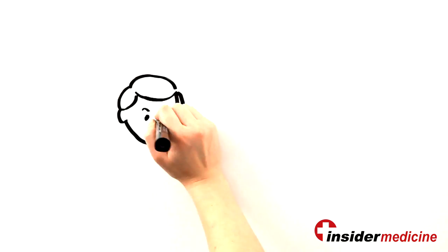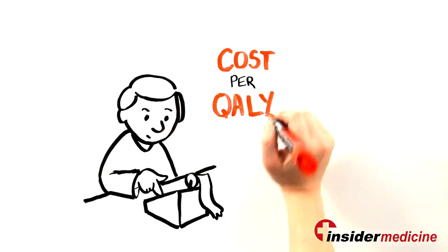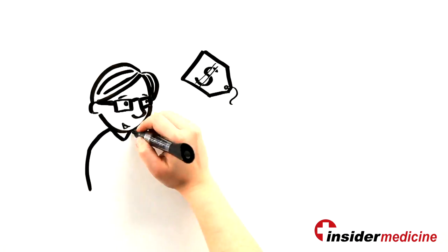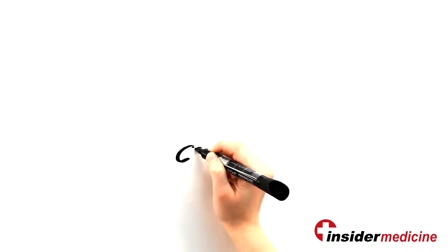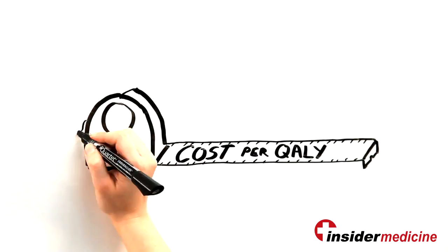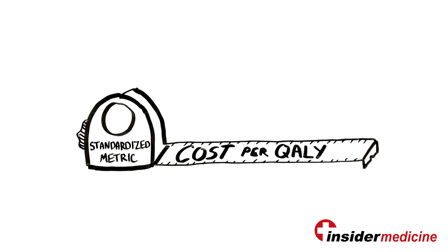Once we have determined the cost, we can then calculate the cost per QALY, or how much does it cost us to gain the equivalent of a year in perfect health for a patient. This cost per QALY becomes a standardized metric to evaluate new interventions.